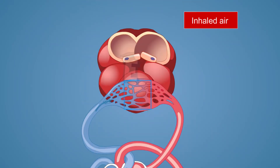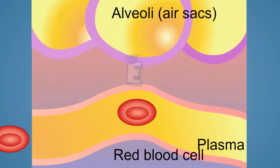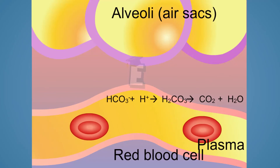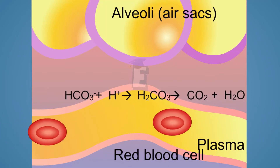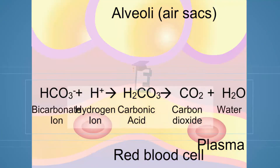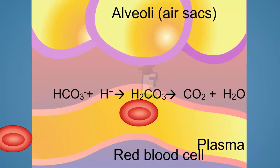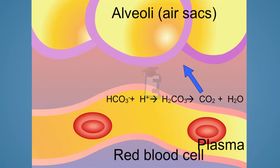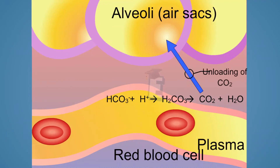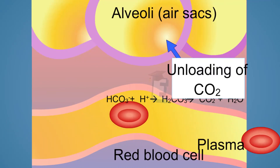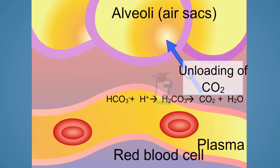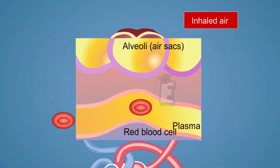The dissolution of carbon dioxide in the blood vessel is done by binding with water to form the bicarbonate ion. After getting into the lungs, the bicarbonate ion is changed back to carbon dioxide and water.